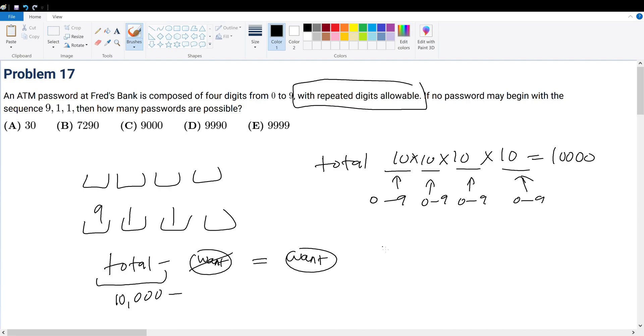But how many passwords of them do I not want? Well, the ones that I don't want must have the first three to be 9, 1, 1. So what does that mean? How many possibilities do I have for the 1,000th digit for the ones that I do not want? Well, the only possibility here is 9. So there's only one possibility going to 1,000th digit.